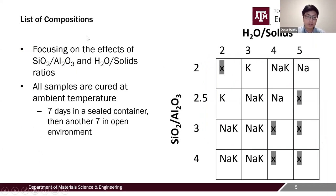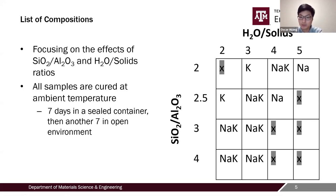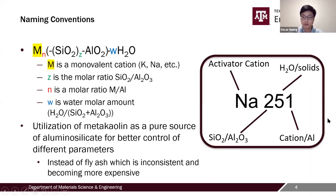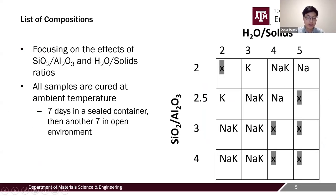We have looked at a total of 16 compositions, focusing primarily on the effect of silicon-to-aluminum ratio and water-to-solids ratio. For example, we have potassium 231 and sodium 241. We keep the cation-to-aluminum ratio at one because the cation balances the negative charge from the aluminum. All samples are cured at ambient temperature — the first seven days under a sealed environment and another seven days under an open environment.